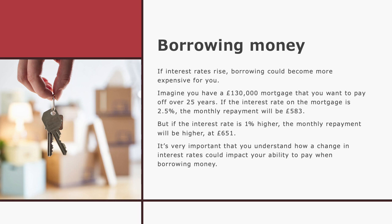If interest rates rise, borrowing could become more expensive. Imagine you have a £130,000 mortgage — a loan to buy a house, paid off over 25 years. If the interest rate on the mortgage is 2.5%, the monthly repayment will be £583. But if the interest rate goes up by just 1% to 3.5%, the monthly repayment rises to £651. So you've got to find around £70 more per month. It's very important as you get older to understand how a change in interest rates can impact your ability to pay when borrowing money.